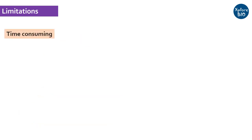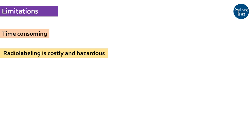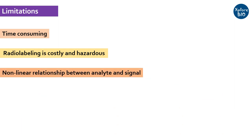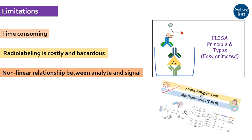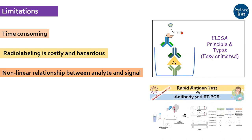Now let's see some of the major limitations of RIA. The assay takes prolonged time, up to a few days. Radioisotopes are costly and hazardous to handle. Lack of a direct linear relationship between analyte concentration and signal response is another major limitation that hinders exact quantification. Another technique called ELISA, or enzyme-linked immunosorbent assay, is also based on antigen-antibody binding but does not involve radiolabeling for detection. These immunokits with some variations form the basis of tests such as rapid antigen tests for COVID-19, pregnancy tests, and others.